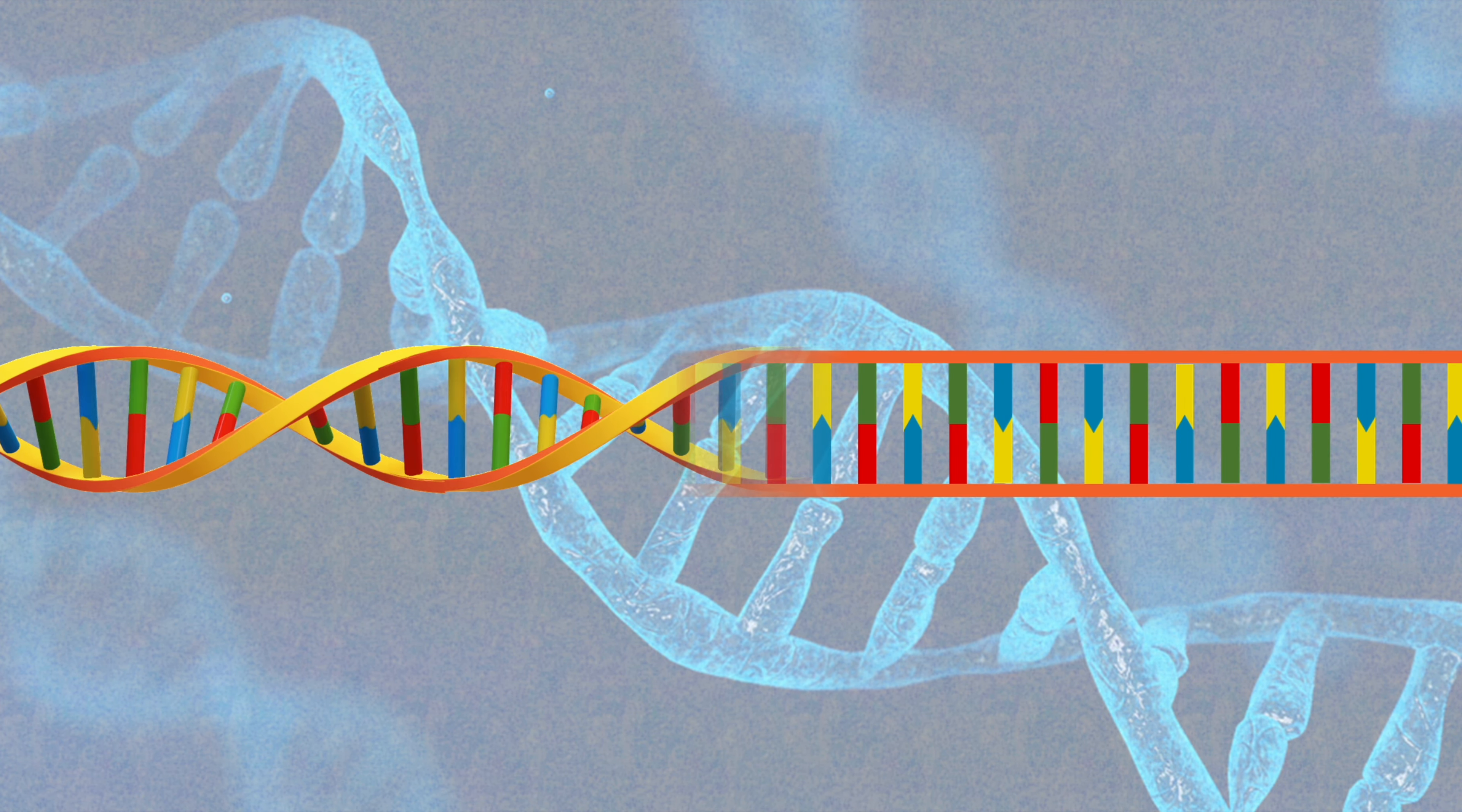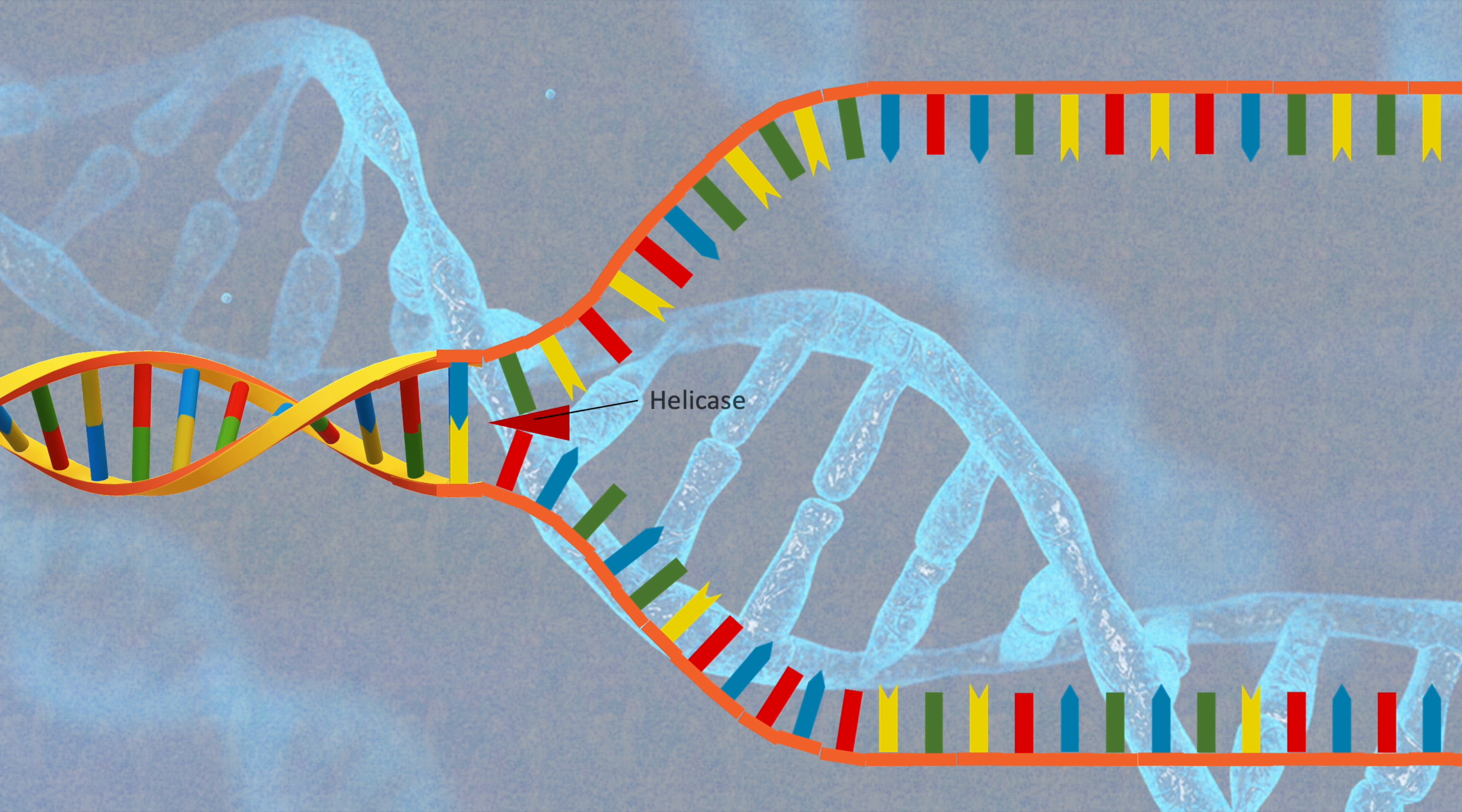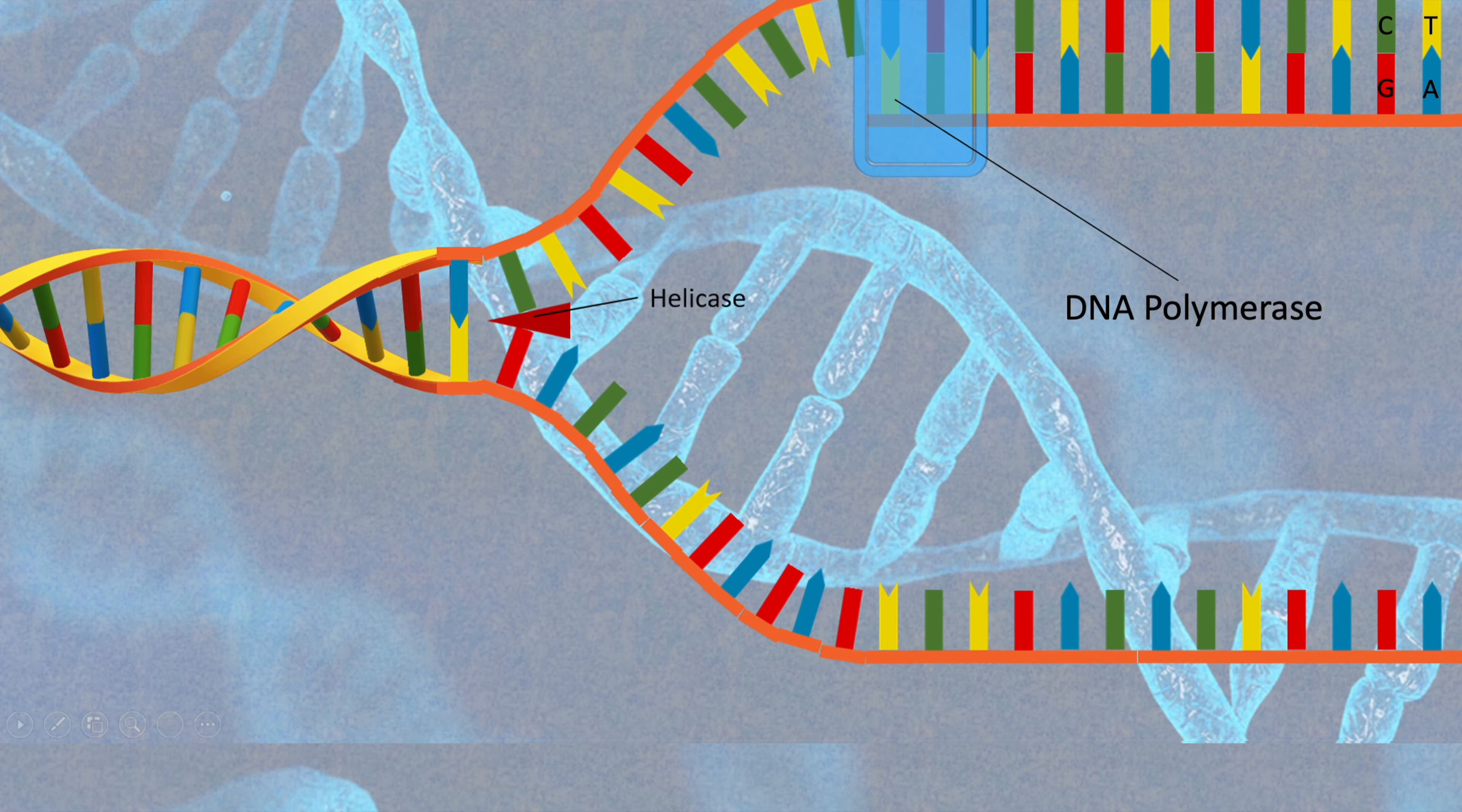Firstly, the enzyme called helicase will unzip the original DNA by breaking the hydrogen bonds holding them together. Enzymes are substances produced by a living organism which provoke a specific biochemical reaction. Once the DNA has been divided, the enzyme called DNA polymerase will add the correct nucleotides to the original strand, making sure that adenine is paired with thymine and cytosine with guanine, vice versa.